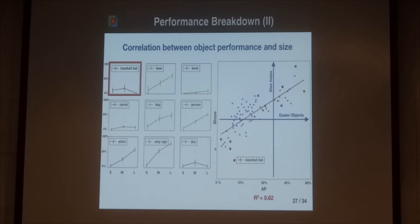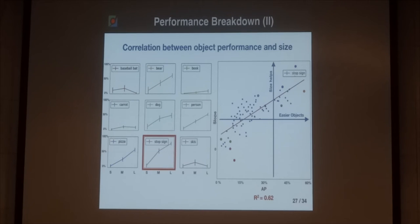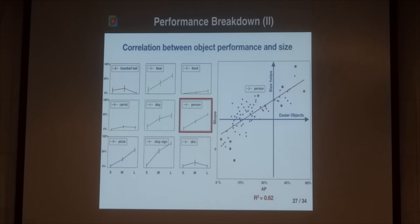If we plot for all 80 categories the AP versus the slope of that size-performance line, we can see a clear trend. On the Y axis we have objects for which size helps recognition, and on the X axis we have objects that are easier to recognize. There's a strong linear correlation. Examples include baseball bats in the lower left corner and bears at the opposite end of the spectrum. A stop sign and the person category are kind of middle of the pack, with very small deviation across all teams.